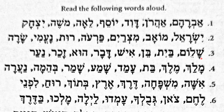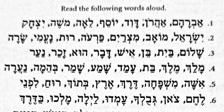Shalom. Bayit. Bein. Ish. Here, Aleph doesn't have any sound, so we start with the Hiriq Yod. These two work together as one vowel. Whenever you see a Yod near the Hiriq, it is possibly a Hiriq Yod because there is no vowel for the Yod itself — that means this is a vowel. Ish. And Davar. Davar.